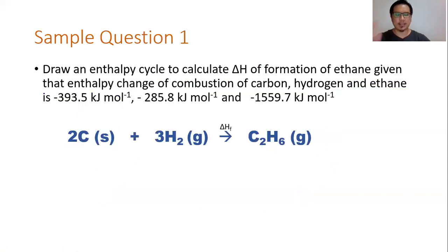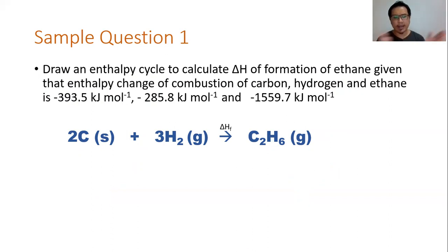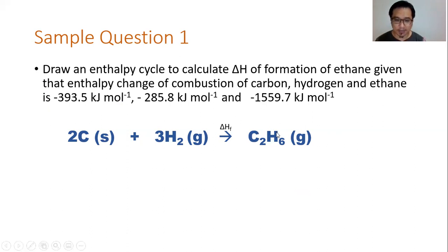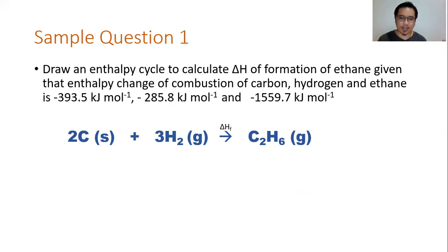Example one: draw an enthalpy cycle to calculate the enthalpy change of formation of ethane, C₂H₆(g), given the enthalpy change of combustion of carbon, hydrogen, and ethane. The first thing to do is construct the equation for the standard enthalpy change of formation. You want to form one mole of ethane, because the definition states the enthalpy change when one mole of compound is formed. So one mole of ethane is formed from its elements — carbon and hydrogen — under standard conditions of 298 K and 1 atm. That is the equation you need to find.